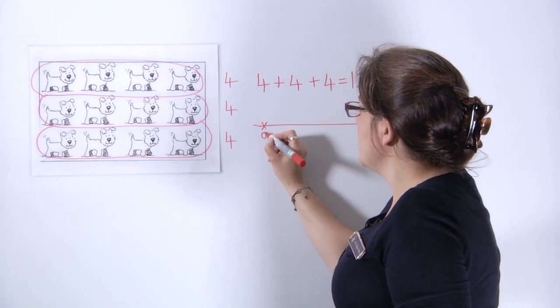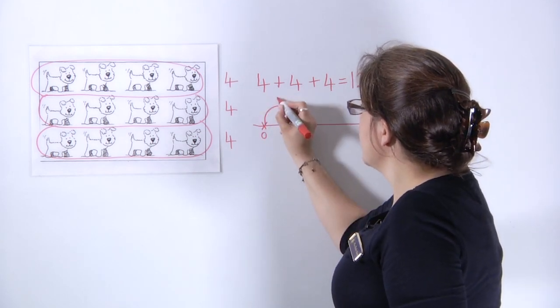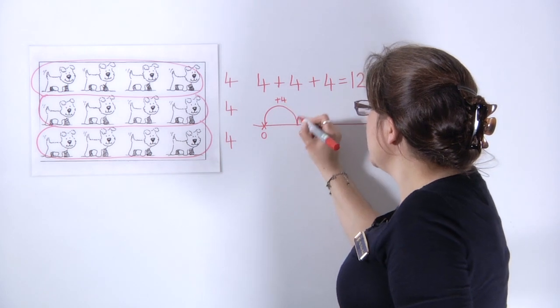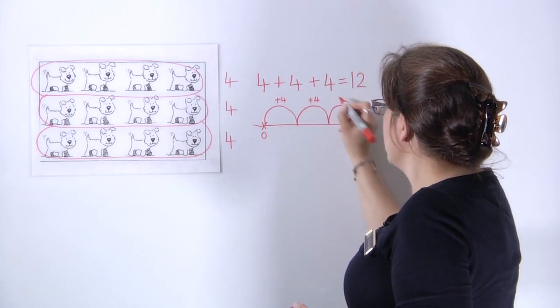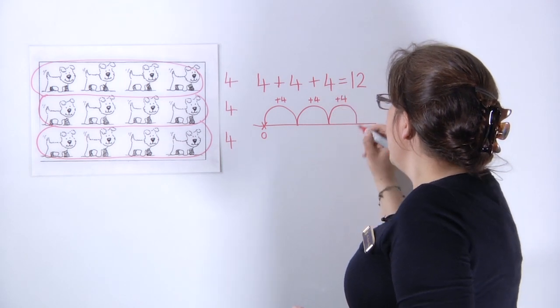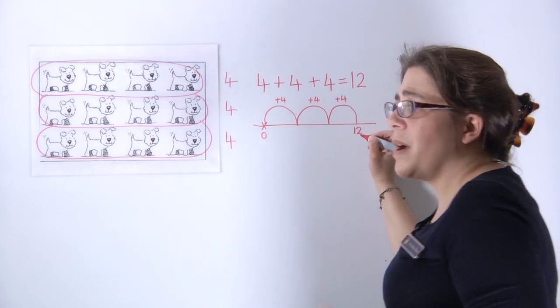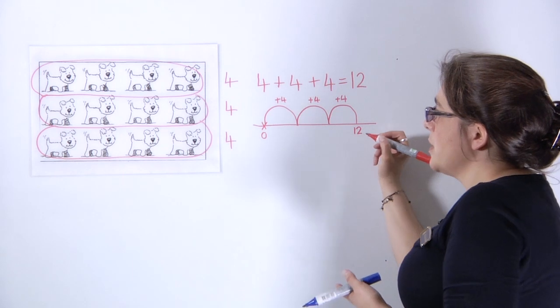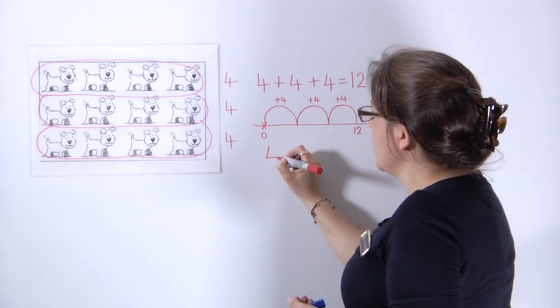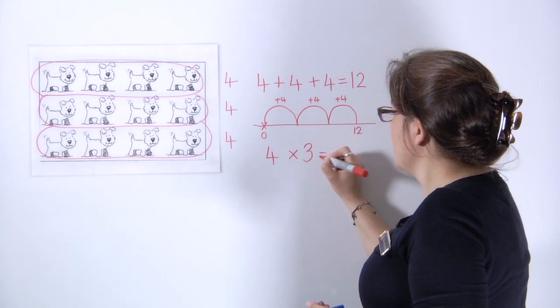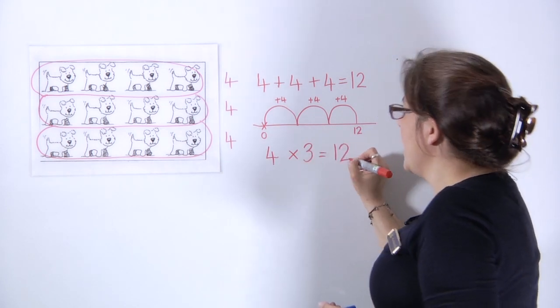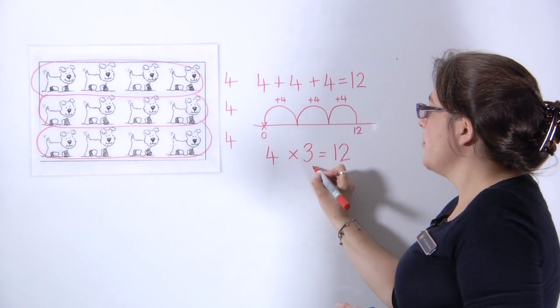We can show this on a number line as three jumps of four. And that helps the children then to think about what multiplication sum this is representing. So we have four in a group and we have three lots of them. We have a jump of four and we have three jumps.